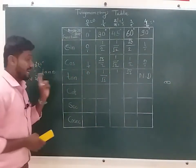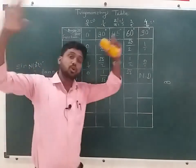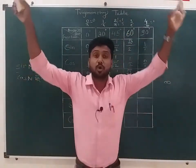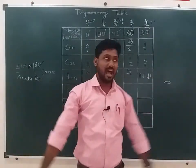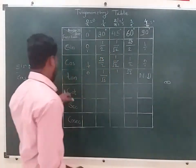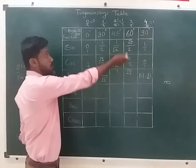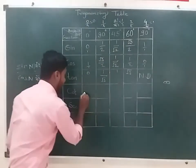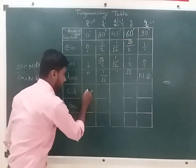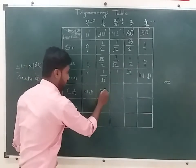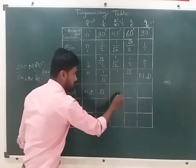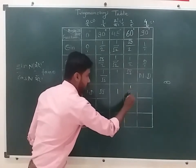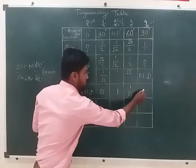So how do we write the tangent? The sign numerator upon the cos numerator. The cos is the sign, then we write the tangent. What is not defined? Root 3, then 1, then 1 upon root 3, then 0.